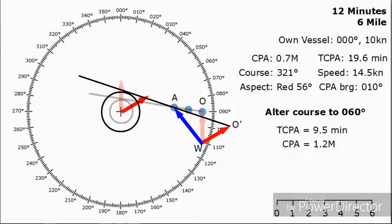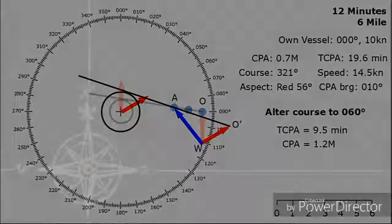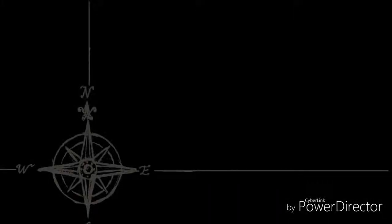And that brings us to the end of this video. Hopefully you've found the information useful and you've learnt how to do a course alteration on a manual radar plot. If you have, a thumbs up is always appreciated. If you've got any questions or comments, just leave them below. And to stay up to date with all videos that I publish, make sure you hit that subscribe button.